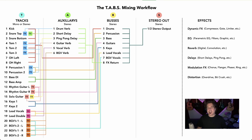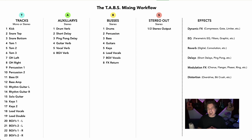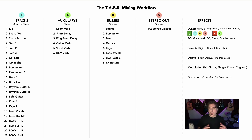One last thing — I want to discuss the effects rules. These are general rules that probably eight or nine times out of ten, if you adhere to them, things will work out great. As a general rule on which parts of TABS — tracks, auxiliaries, buses, and stereo out — to use dynamic effects: you can use compressors, gates, and limiters on tracks, on buses, and on your stereo out. But since our auxiliaries are generally reserved for delays and reverbs, you do not compress, gate, or limit an auxiliary. That's not what it's designed for — you would never do that on a mixing board.